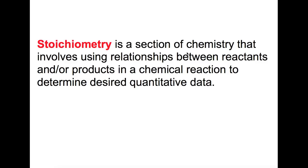Hi and welcome back to my channel. Today we're going to be looking at stoichiometry. Stoichiometry is a section of chemistry that involves using relationships between reactants and products in a chemical reaction to determine desired quantitative data. What this usually means is we're using either chemical formulae or balanced chemical reactions to calculate how much product is produced or how much reactant is used.